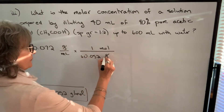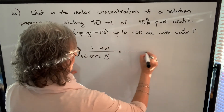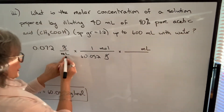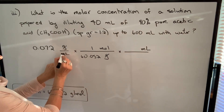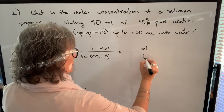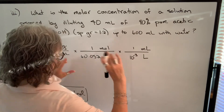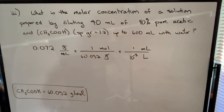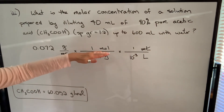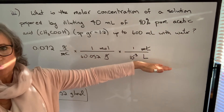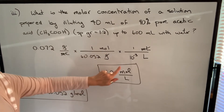Grams cancel. Then I need to change milliliters to liters: milliliters is in the denominator, so put it in the numerator and replace with liters. One milliliter equals 10⁻³ liters, so milliliters cancel. Doing the calculation gives 1.2 moles per liter — that's the molar concentration of the working solution.